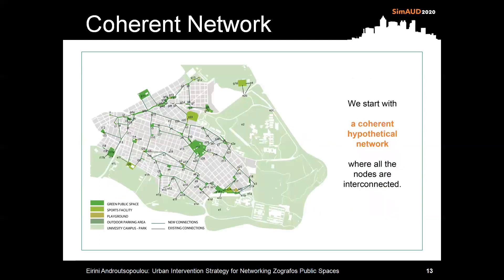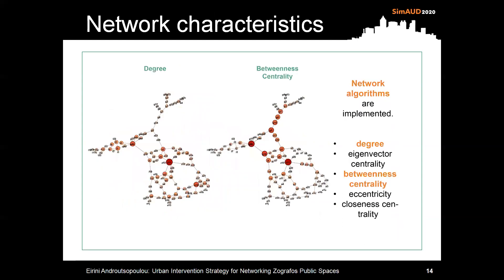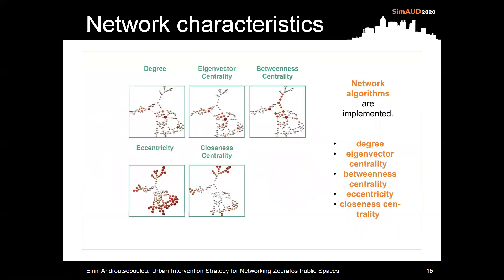In order to select the nodes, and therefore the connections, which are more important for the gradual establishment of a coherent network, we start with a hypothetical network where all the nodes are interconnected. Network algorithms are implemented again at this hypothetical network, which is the final desired outcome of the urban interventions strategy.